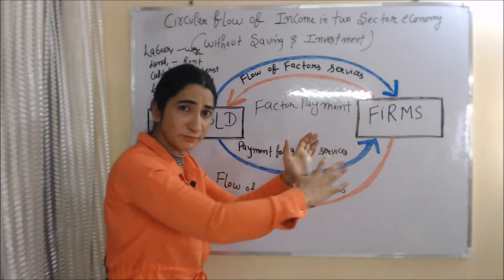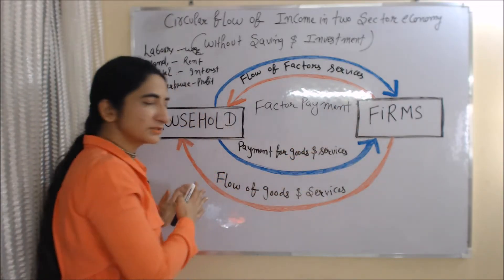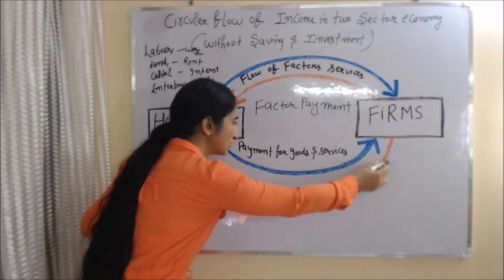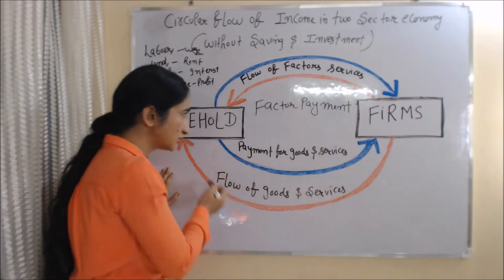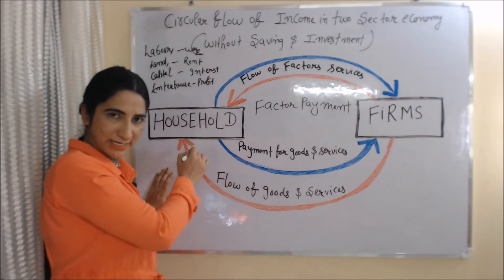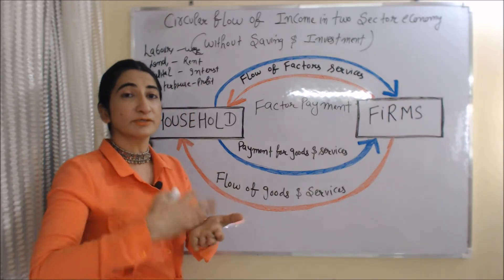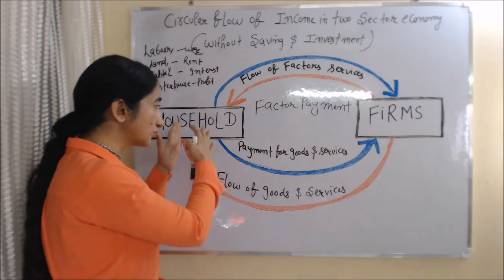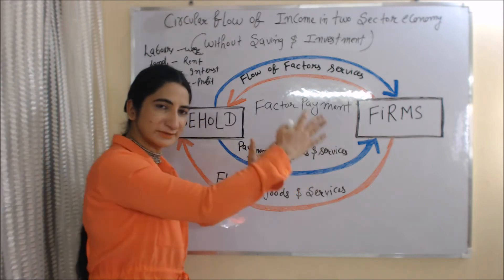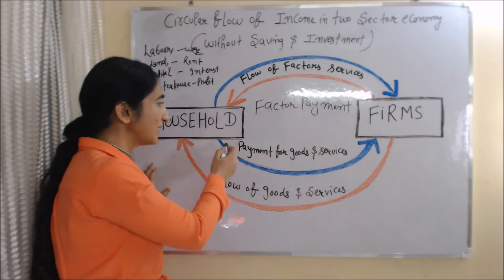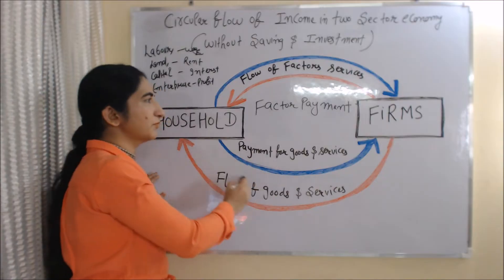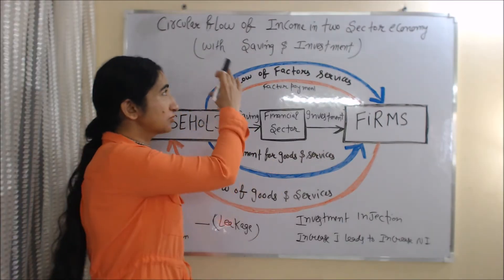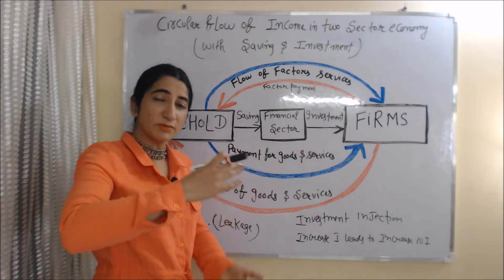The second thing about households is that they buy goods and services from firms, or we can say that firms provide goods and services to the household sector. You can see here the flow of goods and services going from firms to the household sector, and in return the household sector makes payment for those goods and services back to the firms.